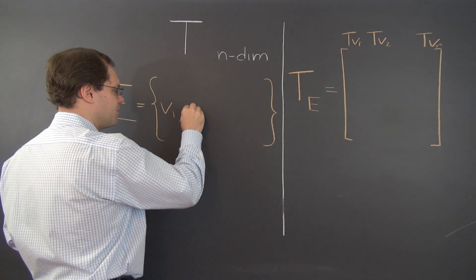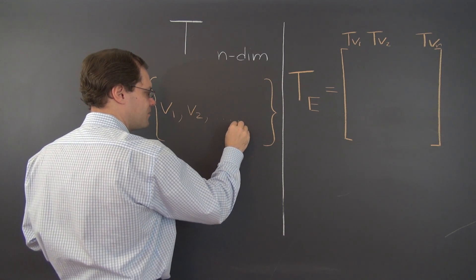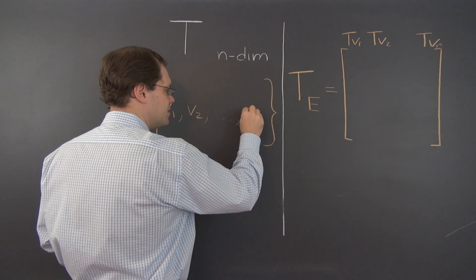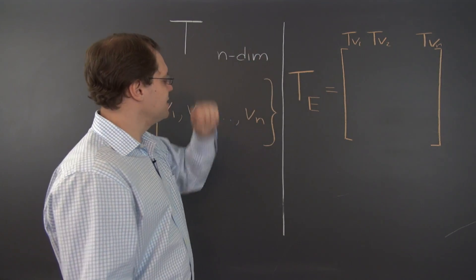And we'll call it V1, V2, and then it's customary to put dot dot dot Vn. These are our n eigenvectors of this linear transformation.